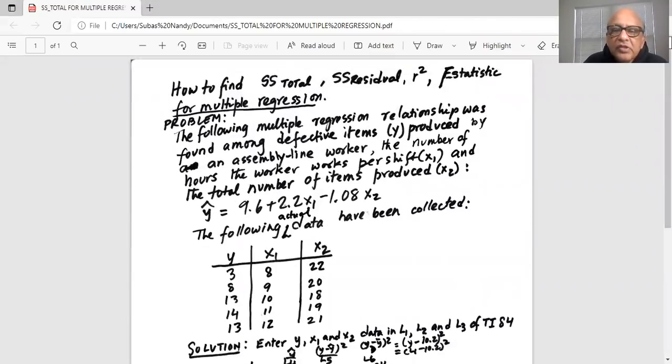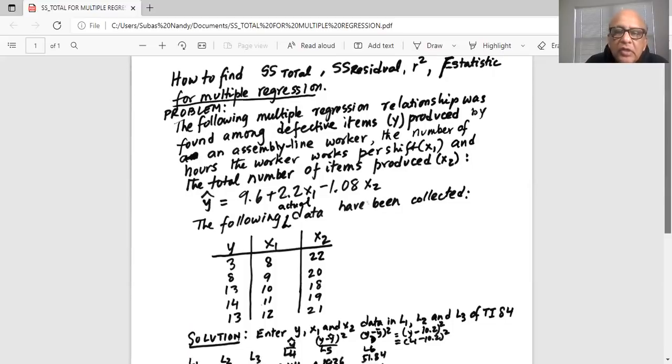The following multiple regression relationship was found among defective items y produced by an assembly line worker. The number of hours the worker works per shift is x1 and the total number of items produced is x2. So there is one dependent variable y and two independent variables x1 and x2. The regression equation is y hat equals 9.6 plus 2.2 x1 minus 1.08 x2. The following data have been collected.